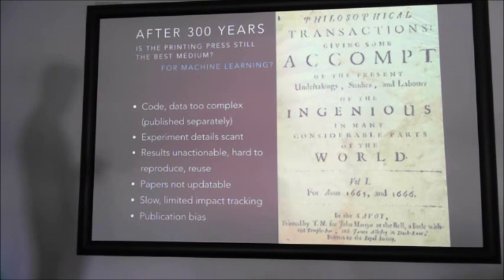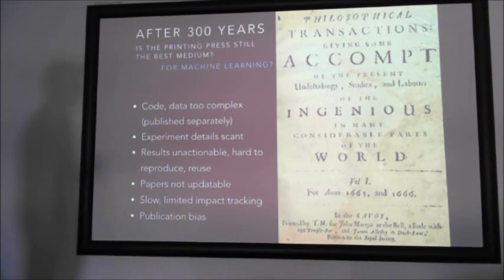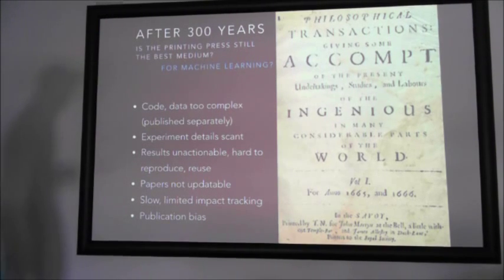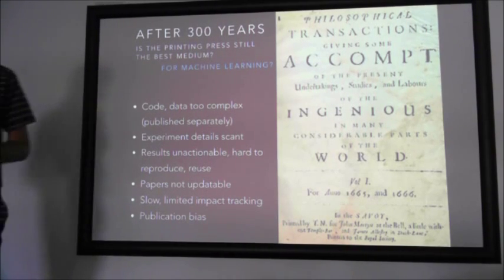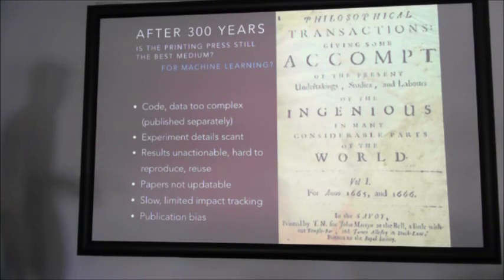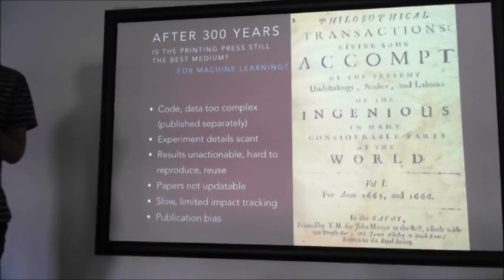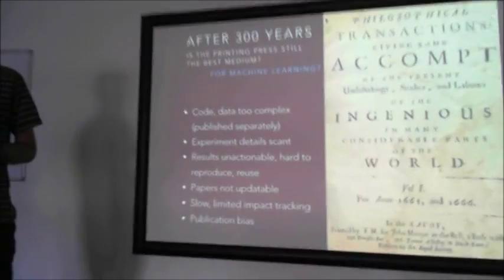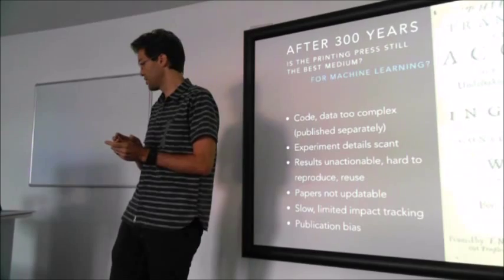Papers cannot be updated. You cannot have a discussion about them right away, or you have to go to Twitter. Also, the impact that your paper has is very hard to see — you get citations, but that doesn't show the real impact. And of course there's publication bias: there's so much work that does not get published, especially negative results that are very important to know about. They don't get published in journals.